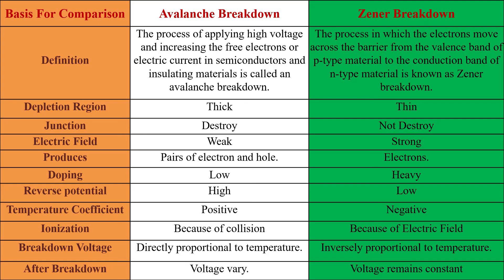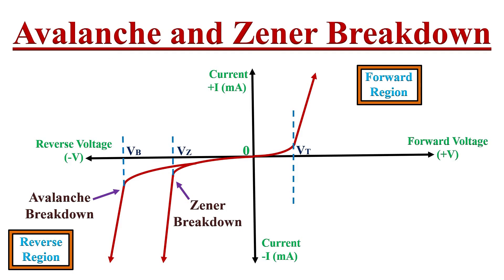In the case of avalanche breakdown effect, as temperature increases the breakdown voltage also increases. A comparison table listing the differences between avalanche and Zener breakdown effect is shown here — please go through it. That's all about avalanche and Zener breakdown effects. If you have learned from this video, please mention it in the comment section below.